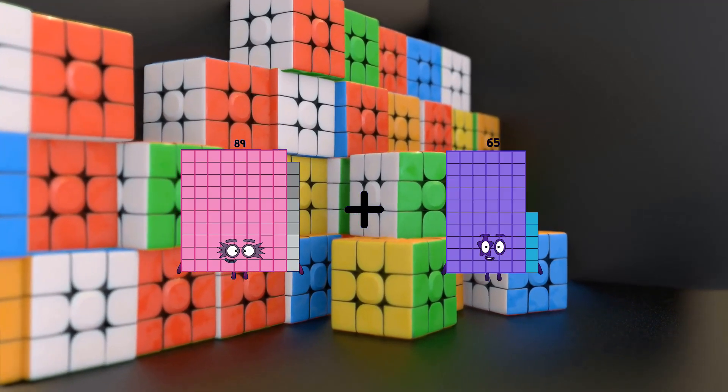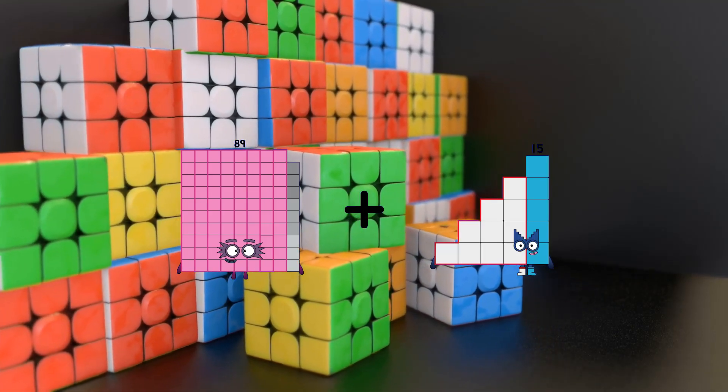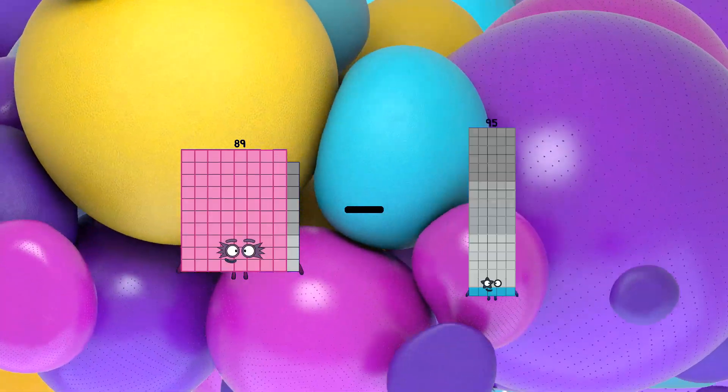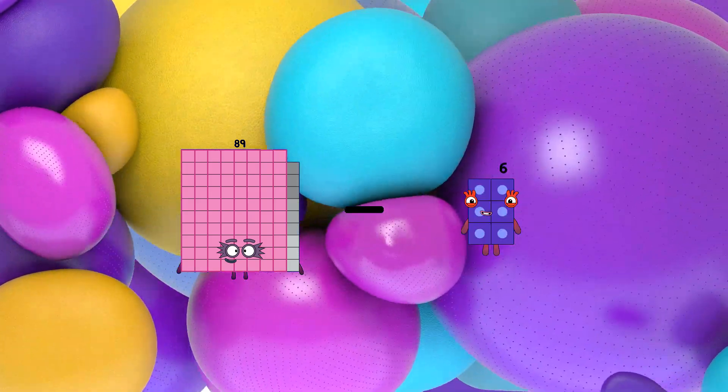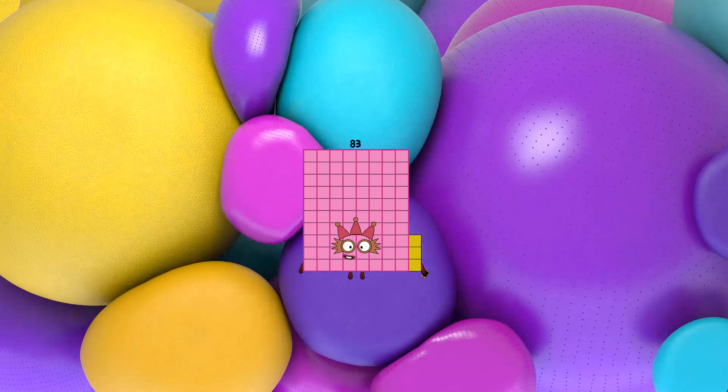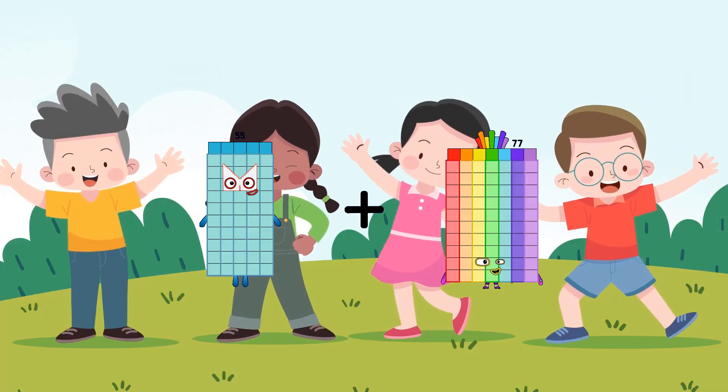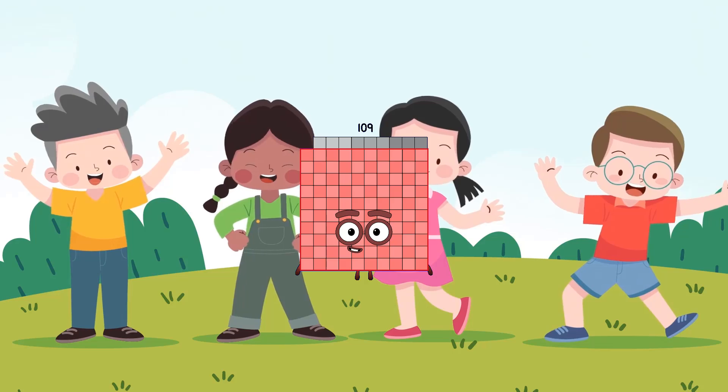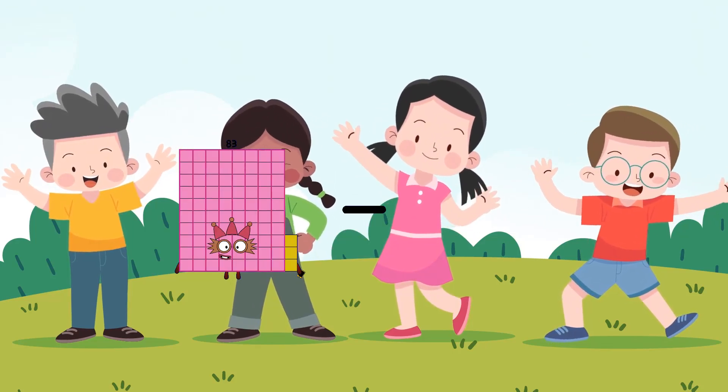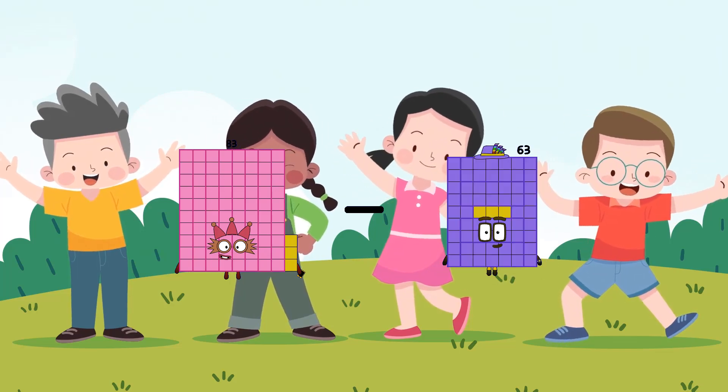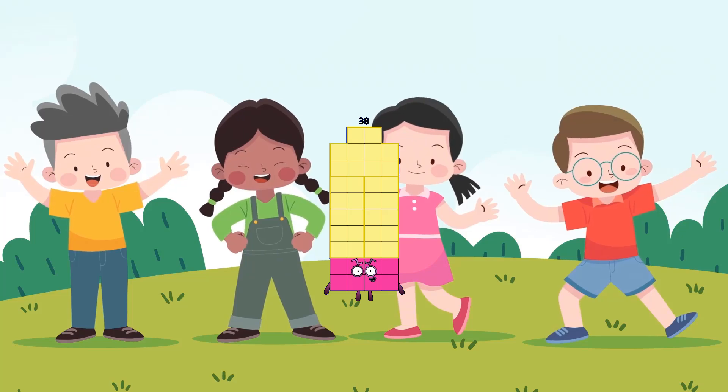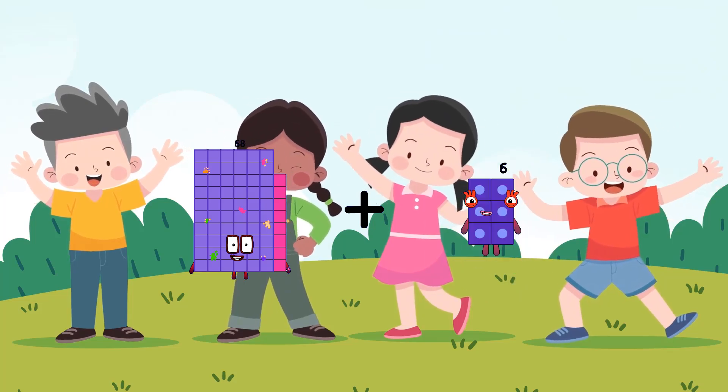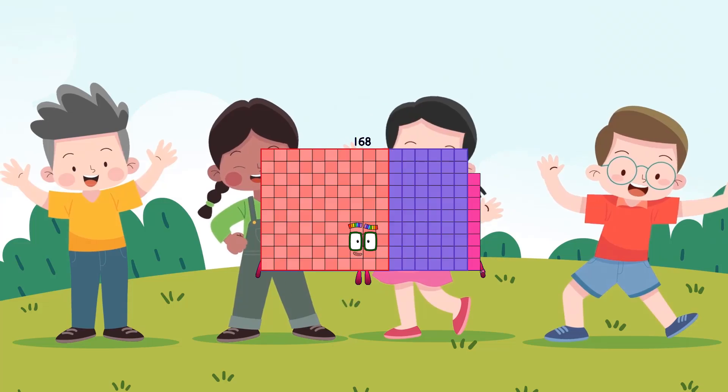89 plus 15 equals 104, 89 minus 6 equals 83, 55 plus 54 equals 109, 83 minus 45 equals 38, 68 plus 100 equals 168.